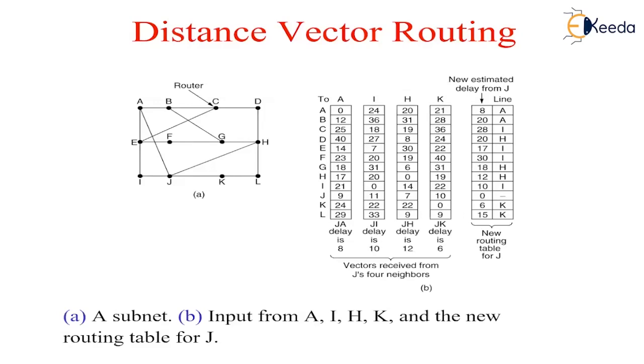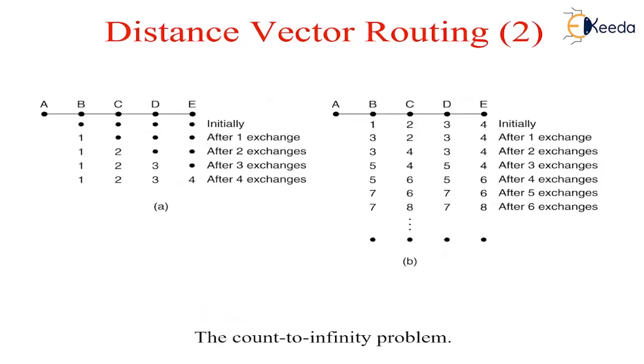Then the count to infinity problem. The distance vector routing works in theory but has a serious drawback in practice. Although it converges to the correct answer, it may do so slowly. In particular, it reacts rapidly to good news but slowly to bad news.